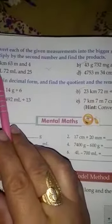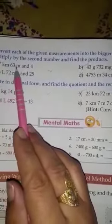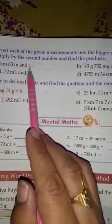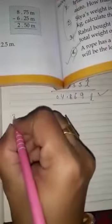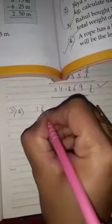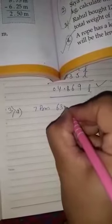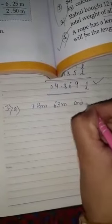First statement given: 7 km, 63 m and 4. This statement multiply with 4. The sum is 7 km, 63 m and 4.